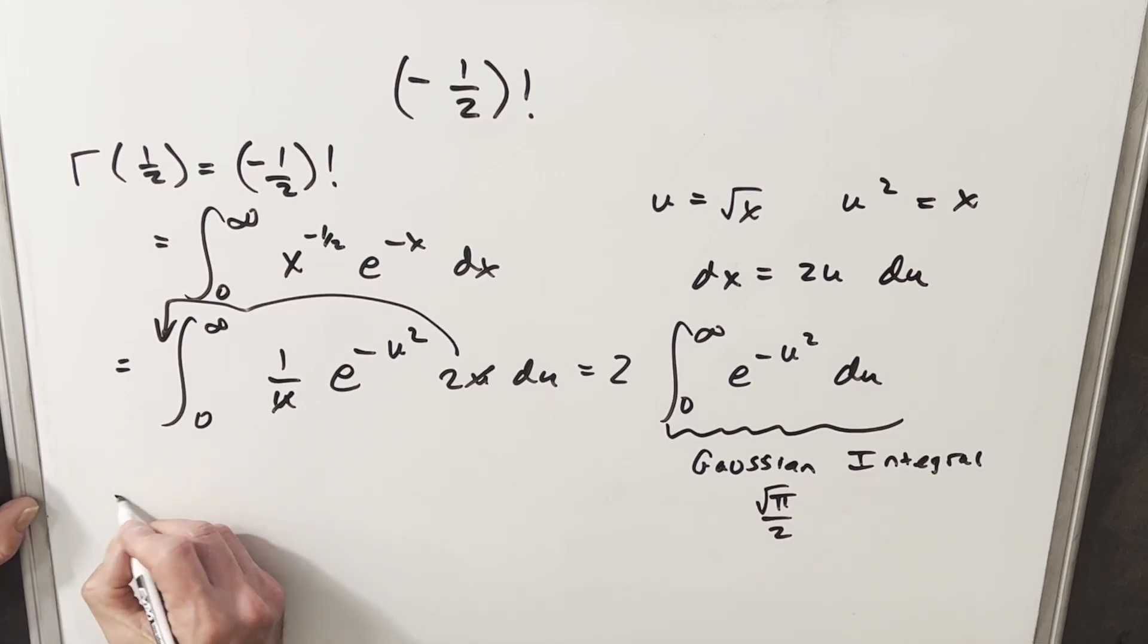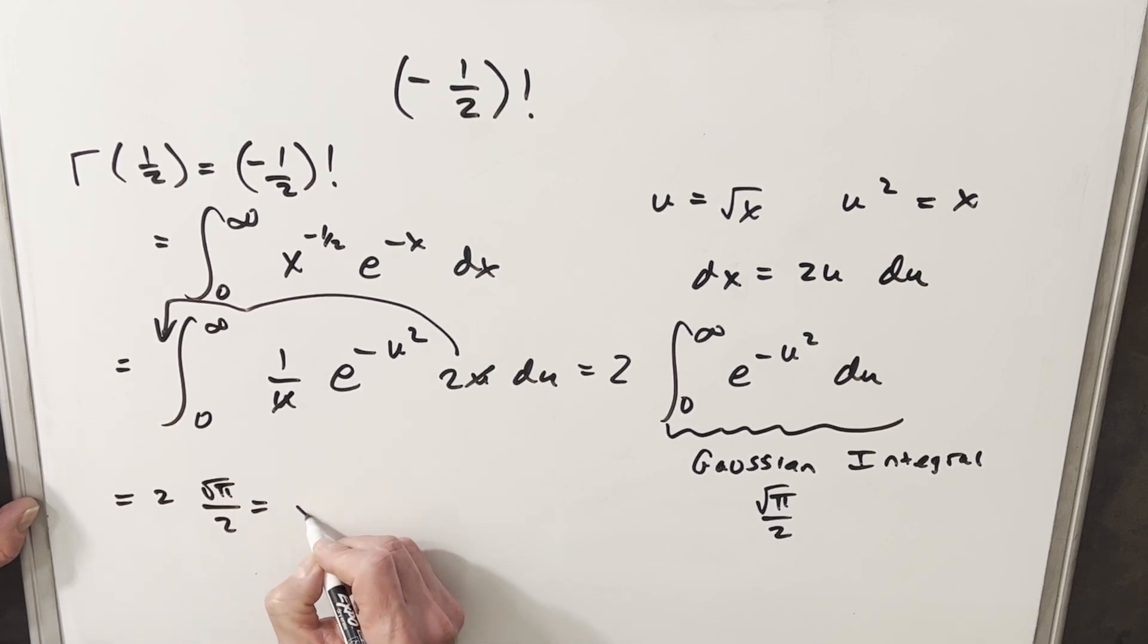So now let's just get our solution. We're going to have our two out front. Square root of pi over 2 is going to give us a nice solution of just square root of pi.